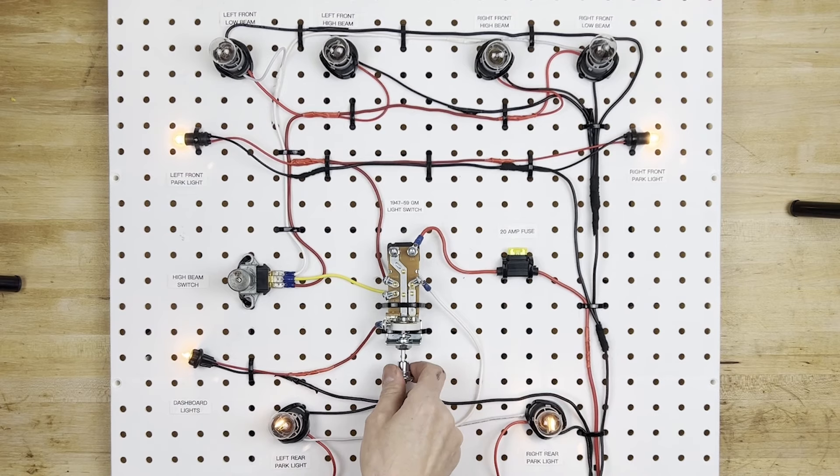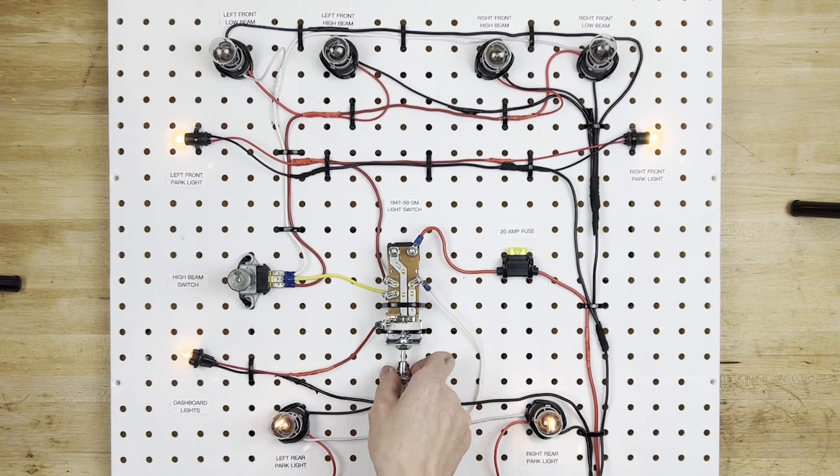And as I said, it is dimmable if you rotate this. So you can see the bulb is getting brighter and dimmer, depending on how much I turn it.